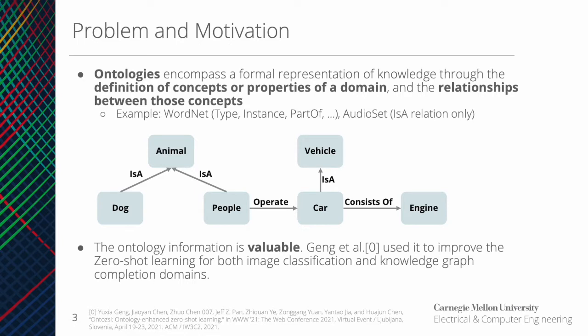Some commonly used ontologies are WordNet and Audioset. The diagram demonstrates what an ontology could look like, where the concepts are dog, animal, people, and vehicle, and their relations are 'isa', 'consists of', and 'operate'.